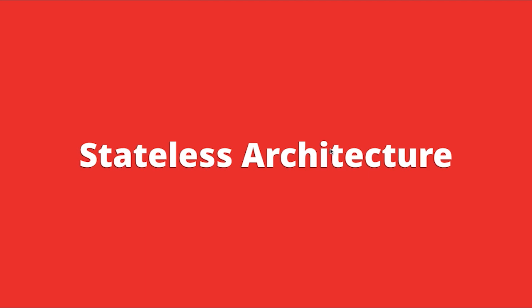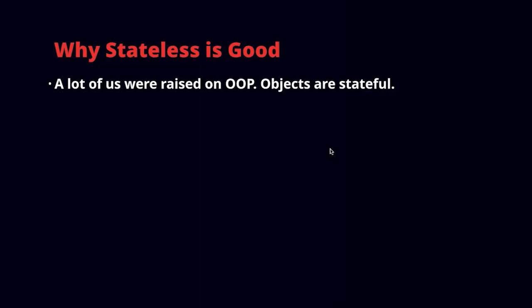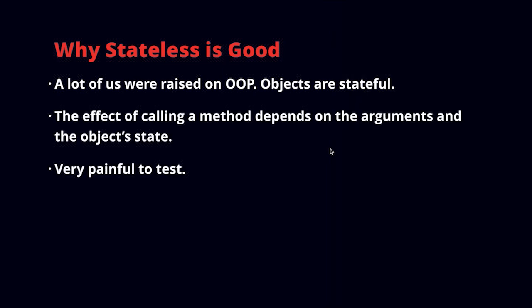Let's talk about stateless architecture and recap why it's good and important. Many of us were raised on object-oriented programming, building software around stateful objects. Objects in OOP are stateful in the sense that the effect of calling a method depends on two things: the arguments you provide, and also the internal hidden state of the object. This was seen as a good idea when OOP came about, but it has a couple of big downsides.